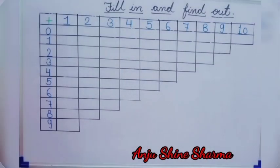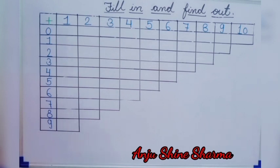Hello everyone. Today I am explaining what makes the numbers 1 to 10, and for this we add numbers from 0 to 10 one by one. So let's just start.